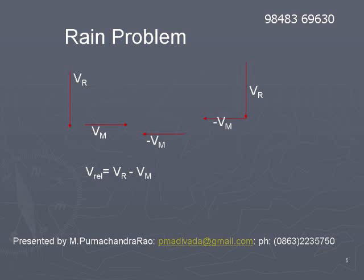Minus vm is opposite to vm, shown at the bottom. That vector is written at the bottom. Then I have constructed vr minus vm. Minus vm is constructed at the head of vr.